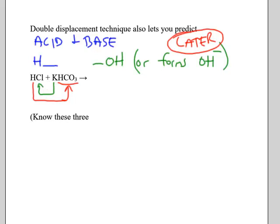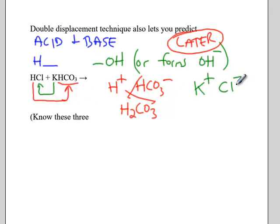We still do our crisscross, so we're going to take H+ and pair that up with the anion HCO3-. One-to-one ratio when we do our crisscross, so we get H2CO3, which is carbonic acid. The other product between the potassium and the chloride, we do our crisscross, and we get potassium chloride.